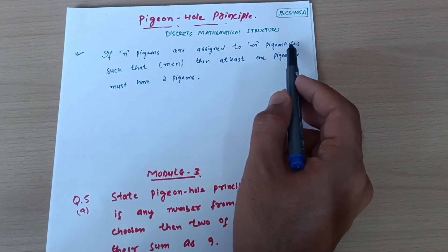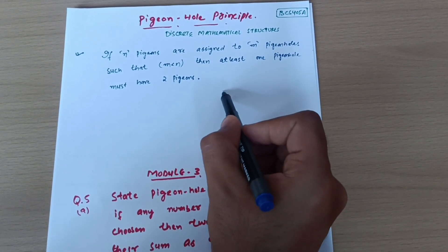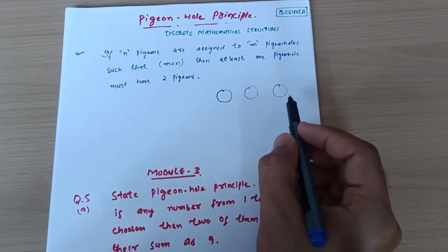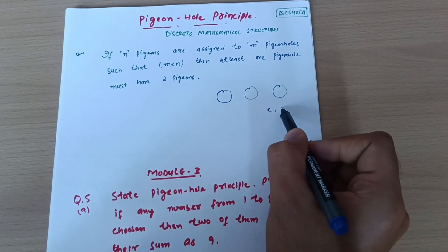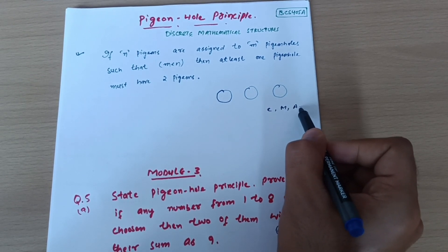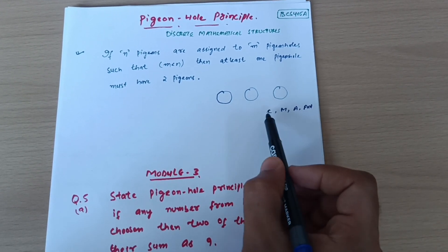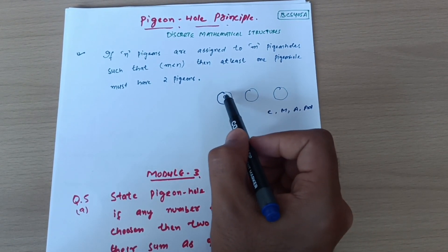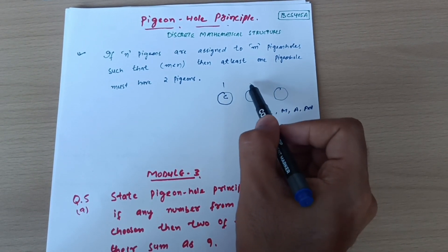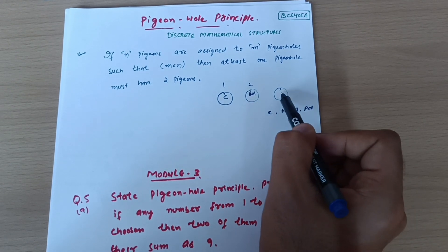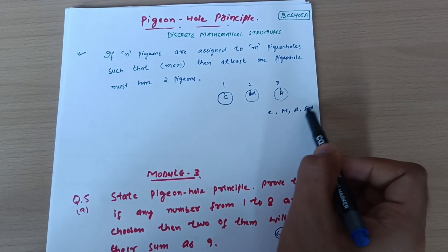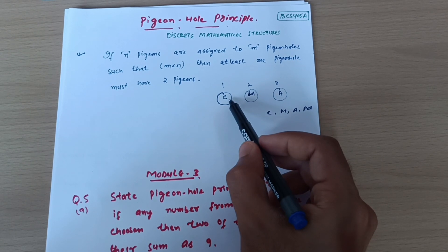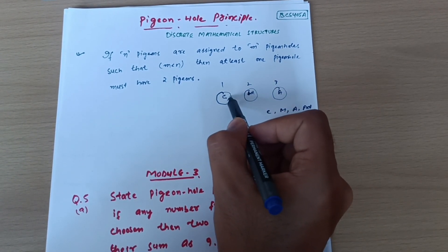Consider m pigeonholes as classrooms. Suppose I have three classrooms, and there are four students — Chirag, Manjunath, Aditya, and Adil. First, Chirag goes in the first classroom, Manjunath in the second classroom, and Aditya in the third classroom. Now I have to adjust Adil into any one of the three classrooms — it may be here, here, or here.